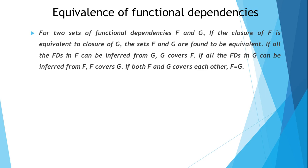The next concept is equivalence of functional dependencies. For two sets of functional dependencies F and G, if the closure of F equals the closure of G, then F and G are equivalent. To check equivalence, find the closure of each set and compare. If all dependencies in F can be inferred from G, G covers F; if all in G can be inferred from F, F covers G. If both cover each other, F and G are equivalent.